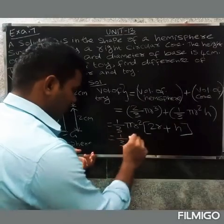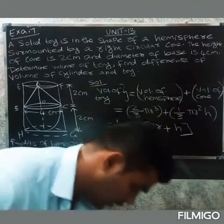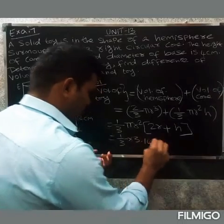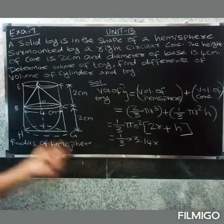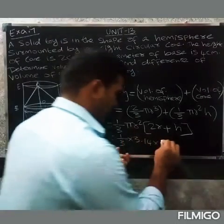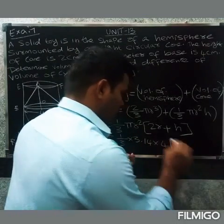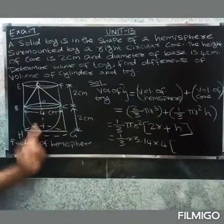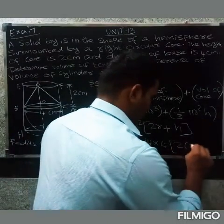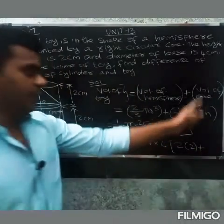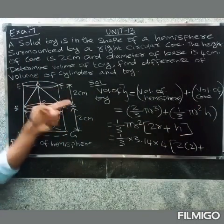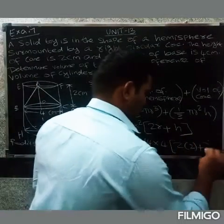Substituting the values: 1/3 into π (3.14) into radius squared (2² = 4), into (2 × 2 + height of cone). Height of cone is 2 cm, so it becomes (4 + 2) = 6.